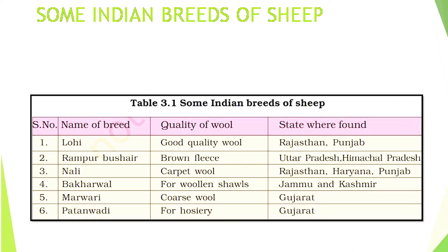Now we come to the next point: from fibers to wool. For obtaining wool, sheep are reared and their hair is cut and processed into wool. Sheep are reared in many parts of our country for wool. In this table I will show the different kinds of breeds found in India, the different states, and the quality of their wool.